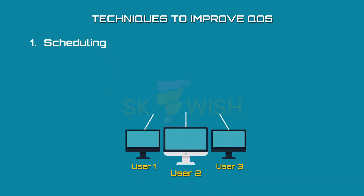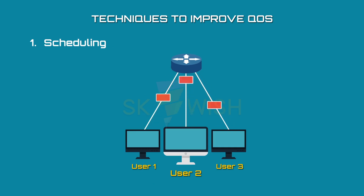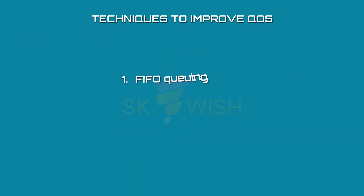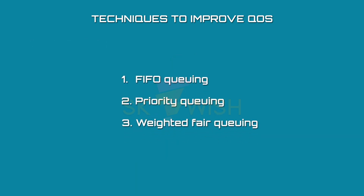Scheduling: a router or a switch gets packets from different flows for processing. All the packets from different flows must be treated fairly to achieve a good quality of service. Some scheduling techniques that improve QoS are FIFO Queuing, Priority Queuing, and Weighted Fair Queuing.